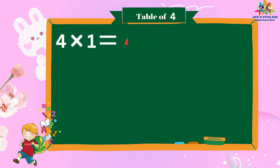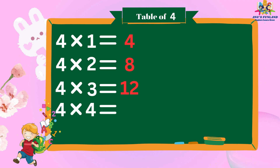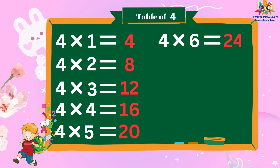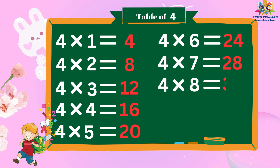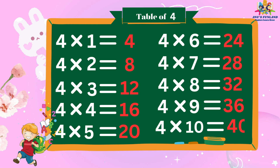Four ones are four, four twos are eight, four threes are twelve, four fours are sixteen, four fives are twenty, four sixes are twenty-four, four sevens are twenty-eight, four eights are thirty-two, four nines are thirty-six, four tens are forty.